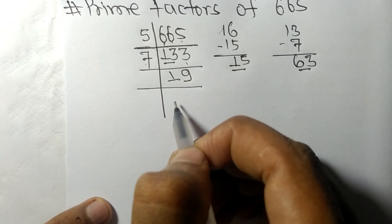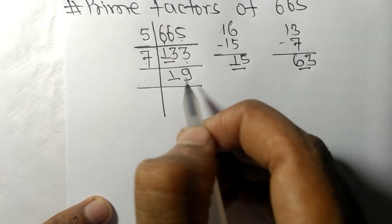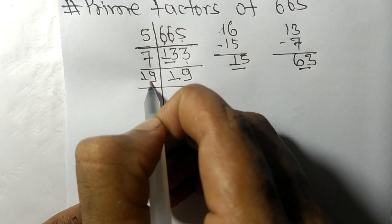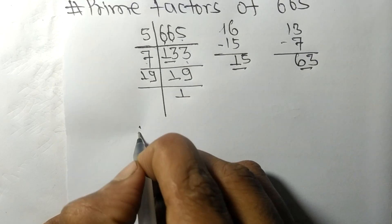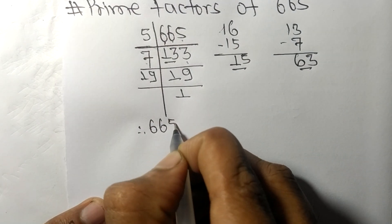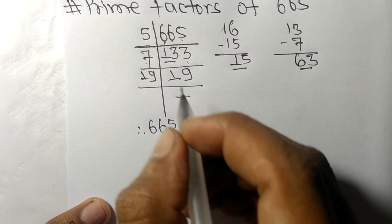Now 19 is a prime number, so it is divisible by 19 itself and we get here 1. Therefore 665 is equal to...